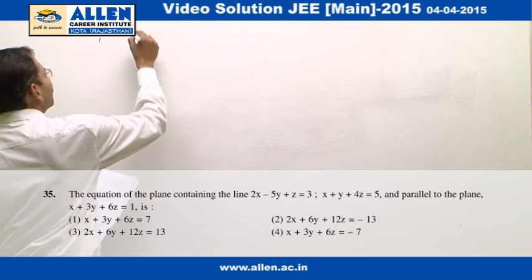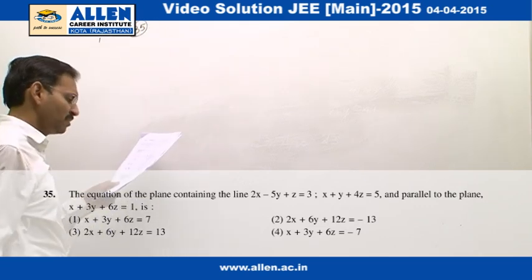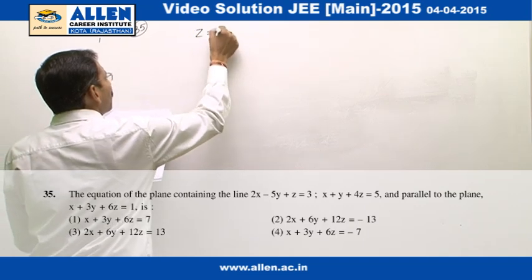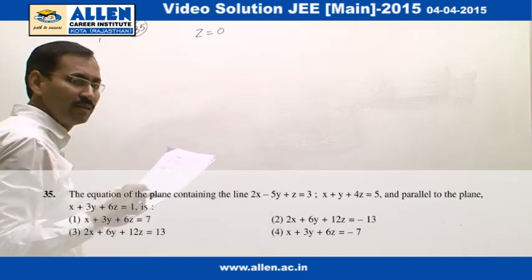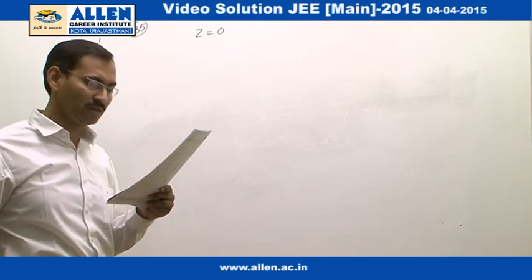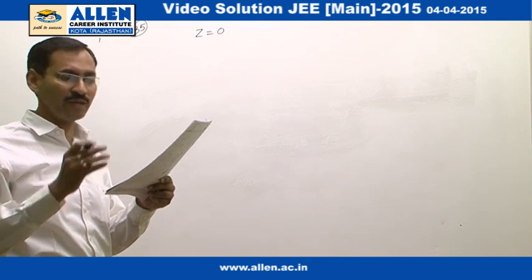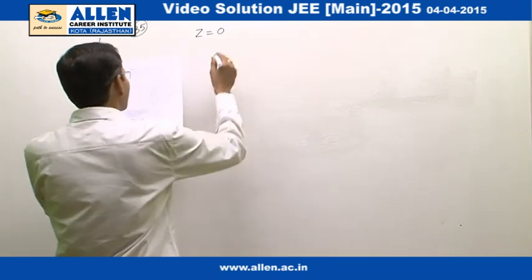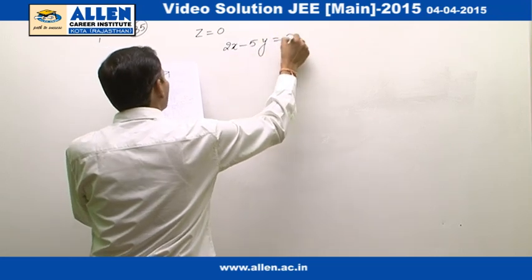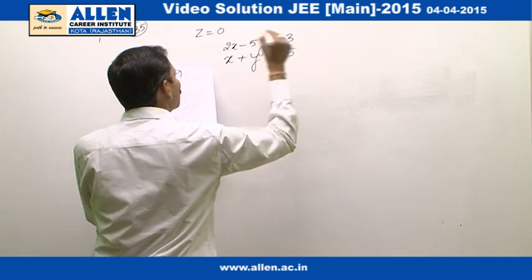Question number 35 — a very simple kind of problem. First of all we will calculate a point lying on the line, meaning the line of intersection of the two given planes. To find that, we will substitute z as 0 in both the planes; then we will have the equations 2x minus 5y equals to 3 and x plus y equals to 5.